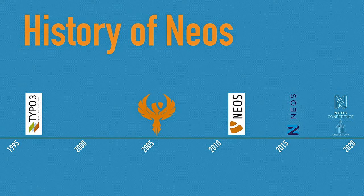If you take a look at this highly accurate timeline of the history of NEOS, you can tell that we're quite old. It starts with the very first release of Typo3, the predecessor of NEOS, in the late 90s — that's 20 years ago, or like 300 JavaScript years. It goes on to the first alpha release of NEOS in 2012 and the split from the Typo3 project, until the rebranding three years ago until today.